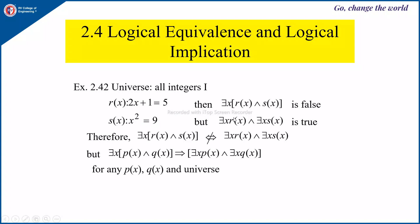Whereas ∃x r(x) ∧ ∃x s(x) is true, because ∃x r(x) is true for x = 2 and ∃x s(x) is true for x = 3. So when you have the existential quantifier separately for r(x) and s(x) it is true. But when you combine them as ∃x[r(x) ∧ s(x)], the same x must make both r(x) and s(x) true simultaneously, so it is false. Therefore, ∃x[r(x) ∧ s(x)] is not equivalent to ∃x r(x) ∧ ∃x s(x).